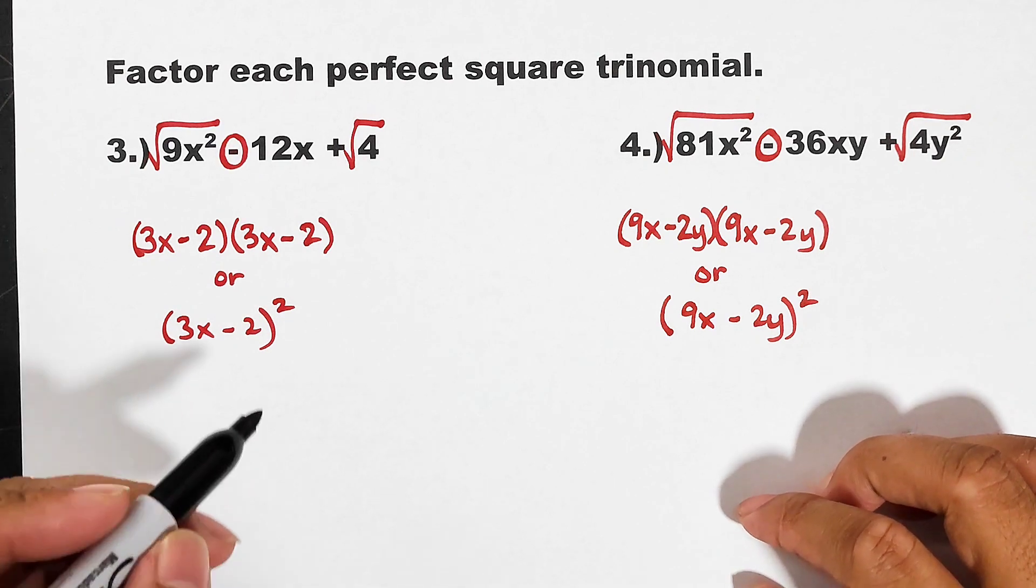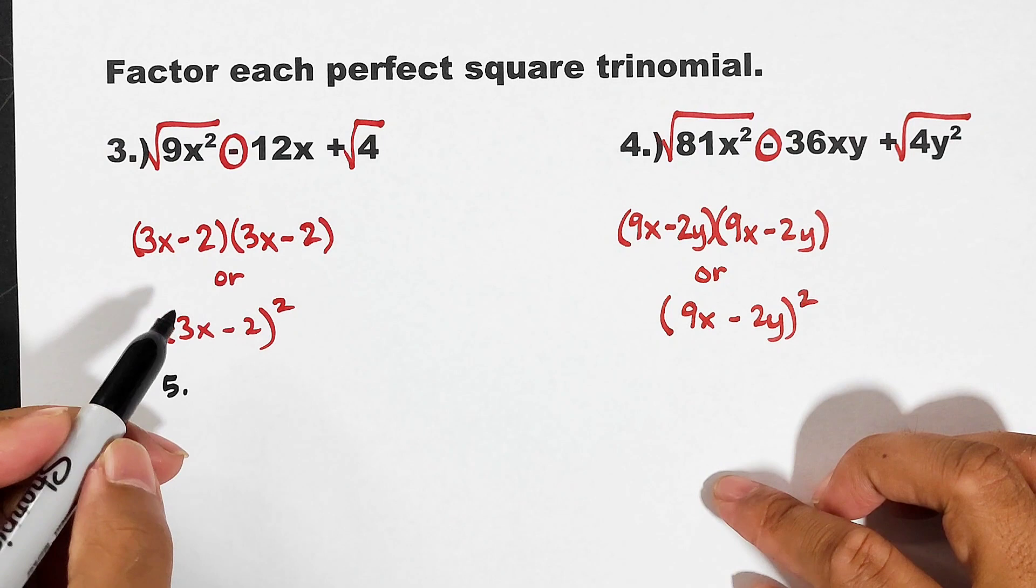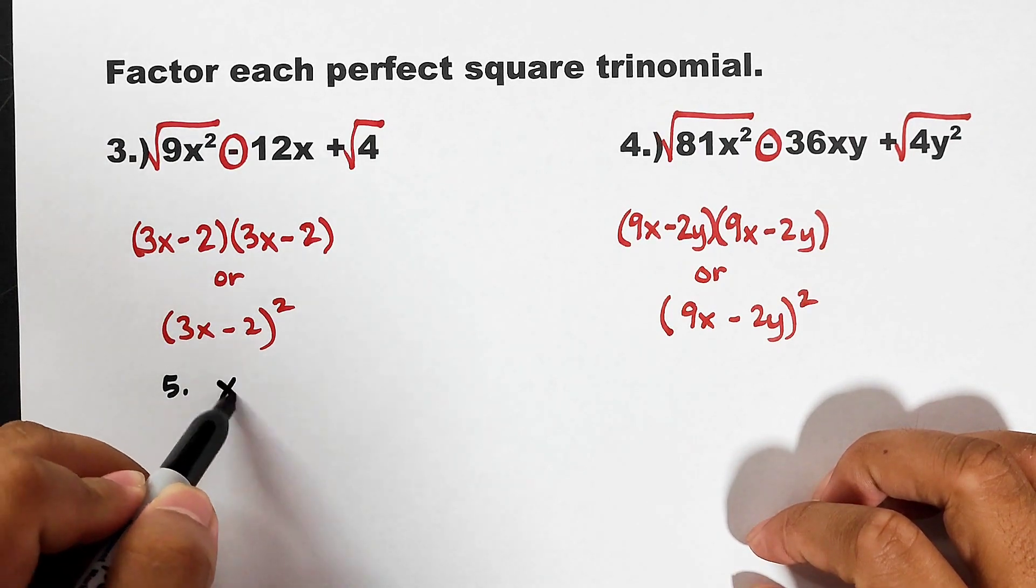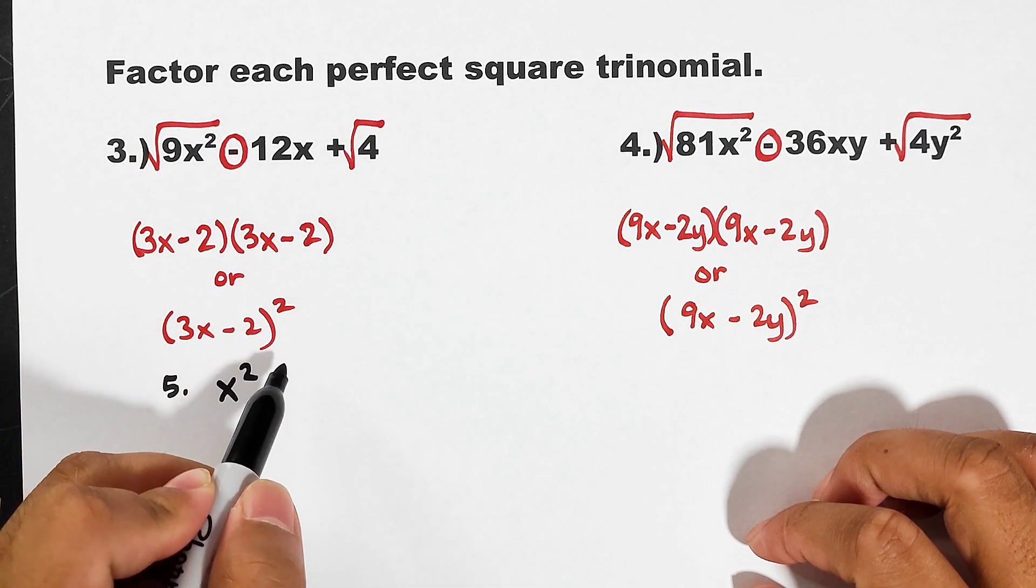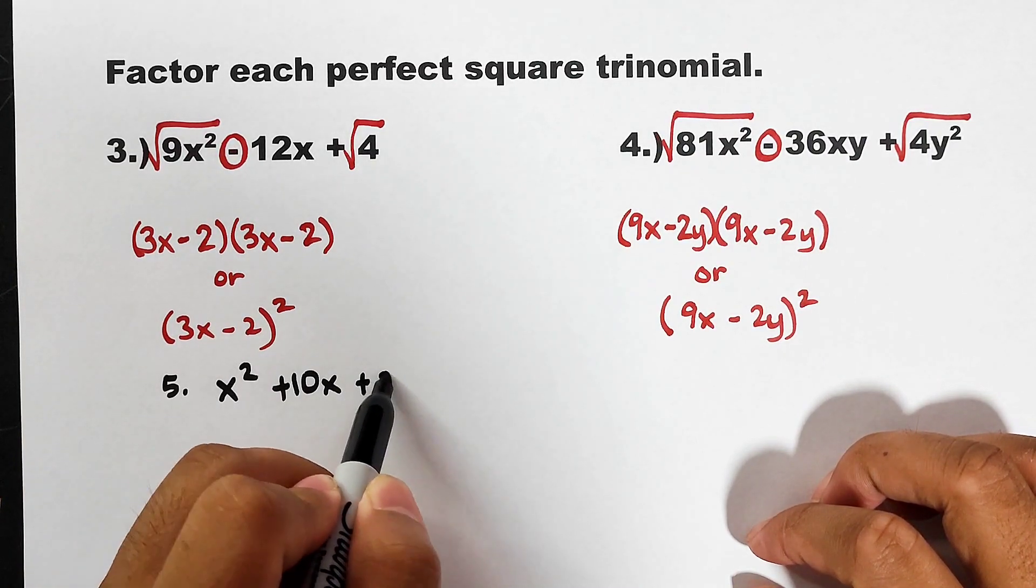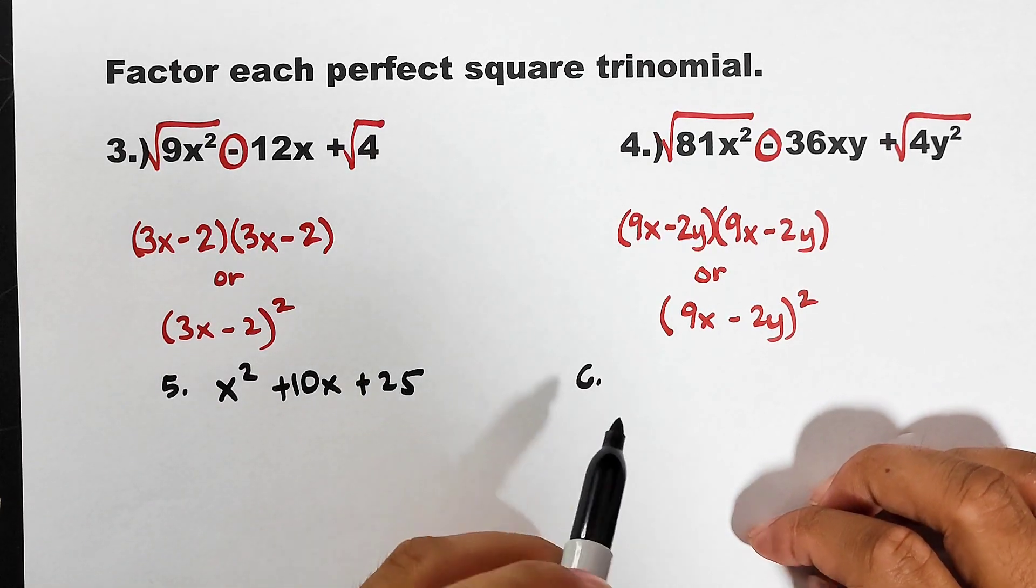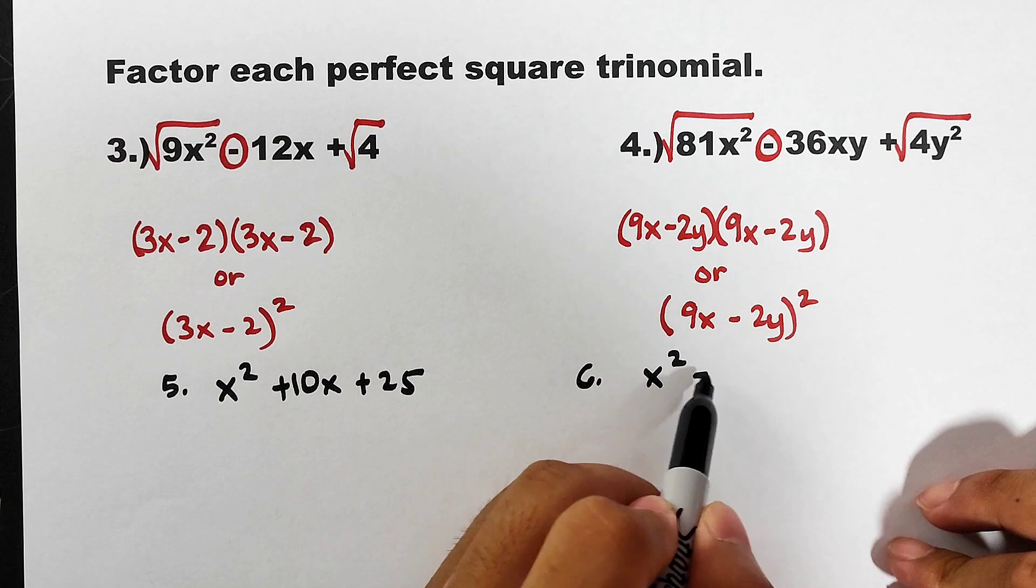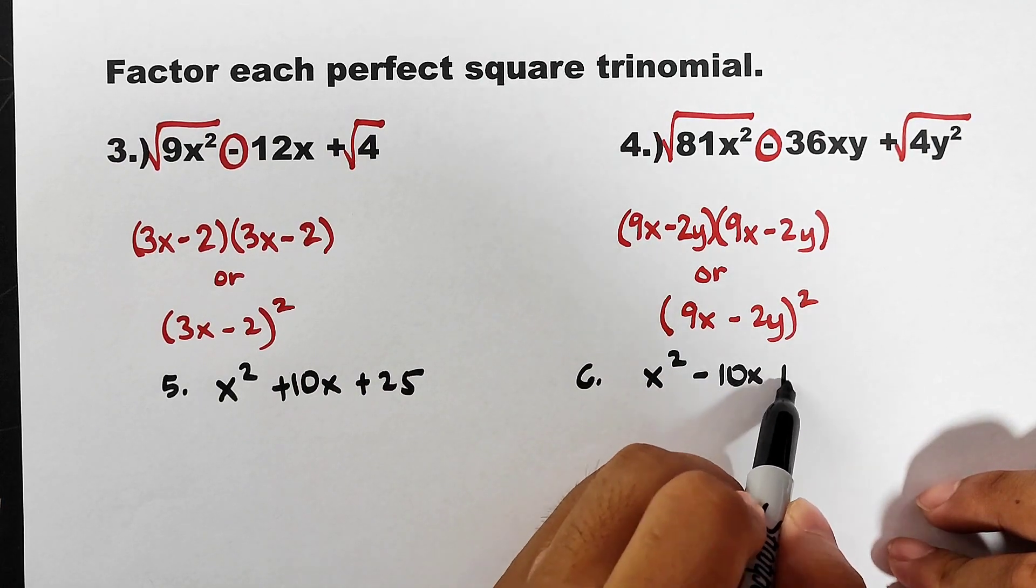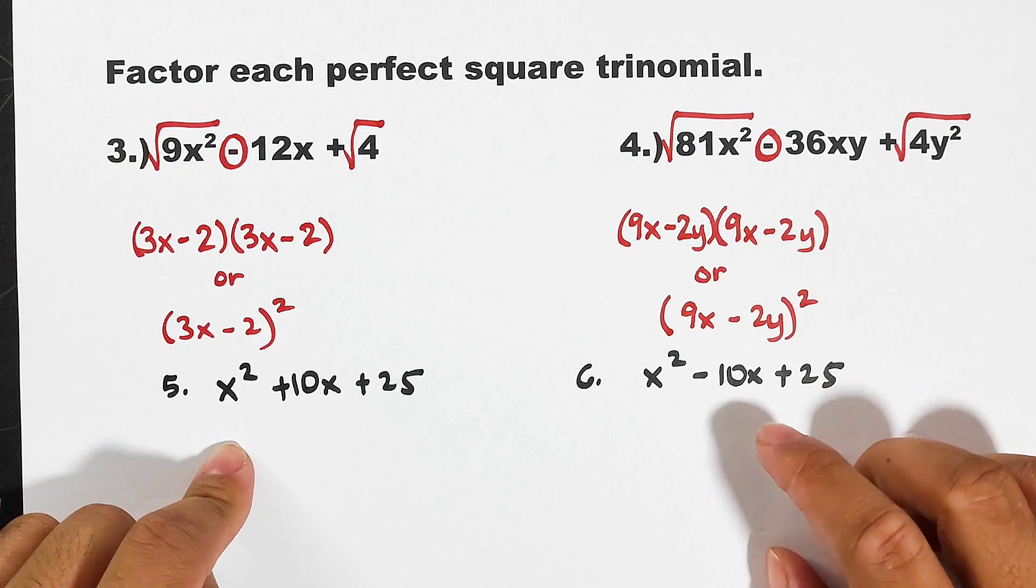Now guys, as part of our routine, again if you are following our tutorial videos, I will give you an activity wherein I will ask you to factor number 5, wherein the given is x² + 10x + 25. For number 6, you have x² - 10x + 25. So I hope guys that you can answer these in our comment section. Please comment down below what are the factors of these items.